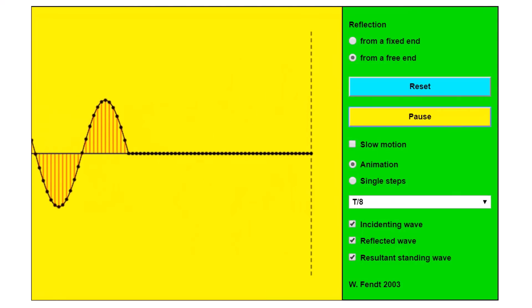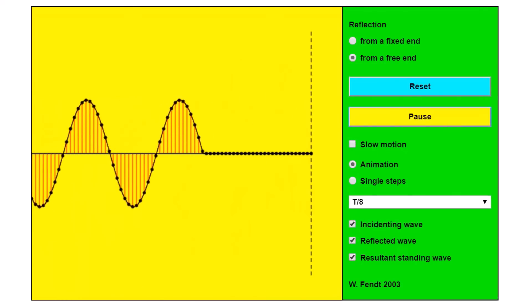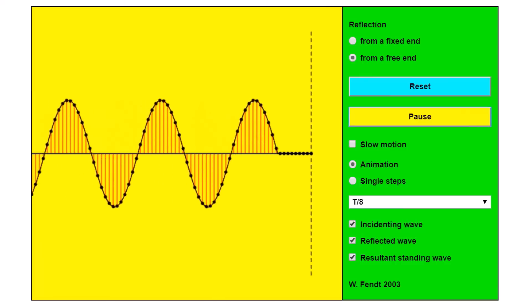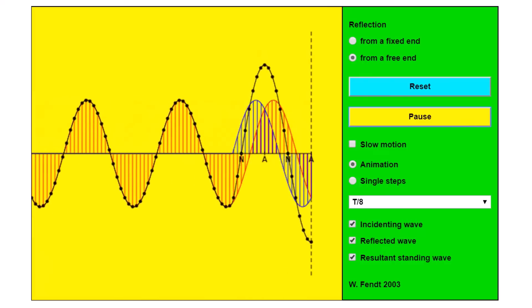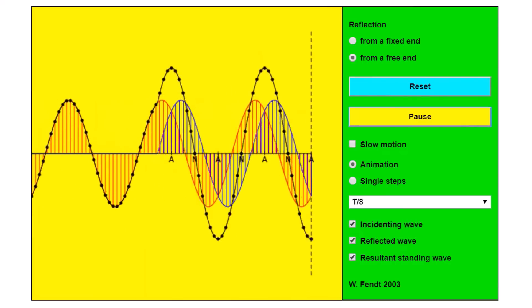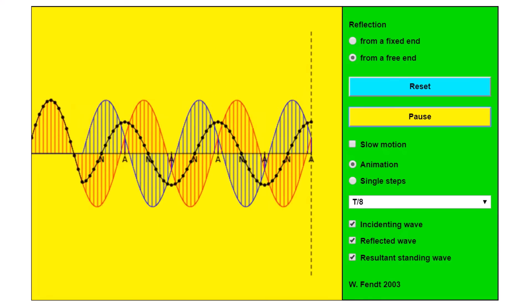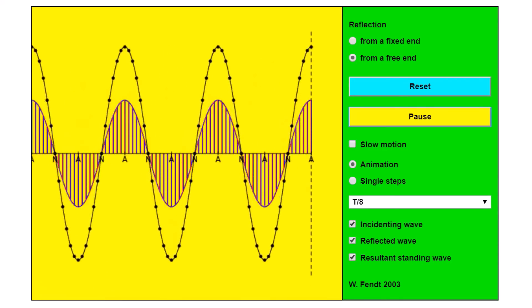So again, we have an incident wave. It's going to hit a loose end this time. The red and the blue are the incident and reflected waves. They're identical to each other, just that they're moving in opposite directions. They superpose to become the standing wave in black.